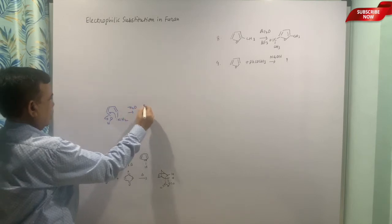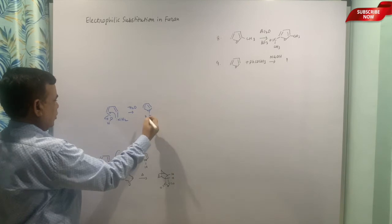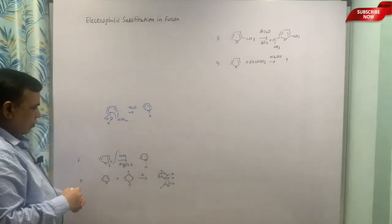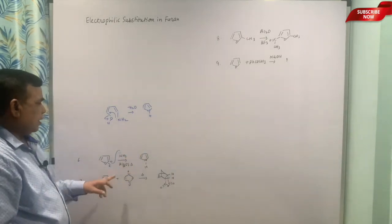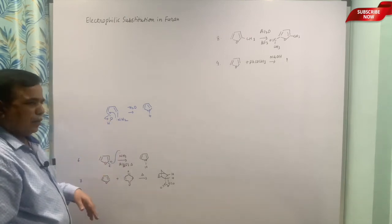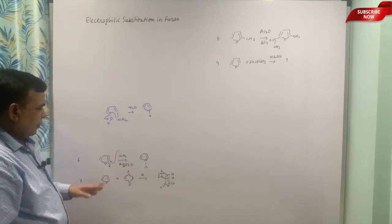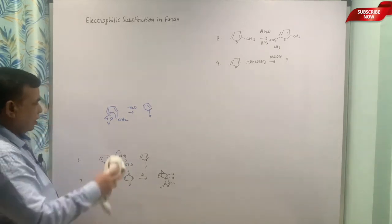Ultimately this NH2 will attack here, this will go off. So minus H2O can give us that. That is how the mechanism you can put. The role of alumina is to take care of the water which is coming out, and heating is also there, so dehydration would be faster. So that is how this reaction goes.